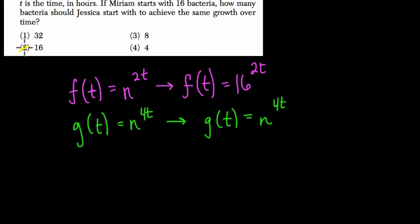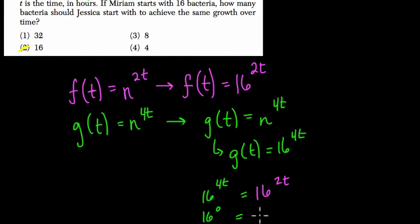we can eliminate choice 2, because think about it, there's no way if this is 16. Let's just write it out so you can see what it looks like. If g(t) = 16^(4t), notice, how could 16^(4t) equal 16^(2t)? When would this happen? This would only happen when t was 0, because then you'd get 16^0, which is 1, and that would equal 16^0 here as well, which is 1 as well. But other than that, you would get different values.